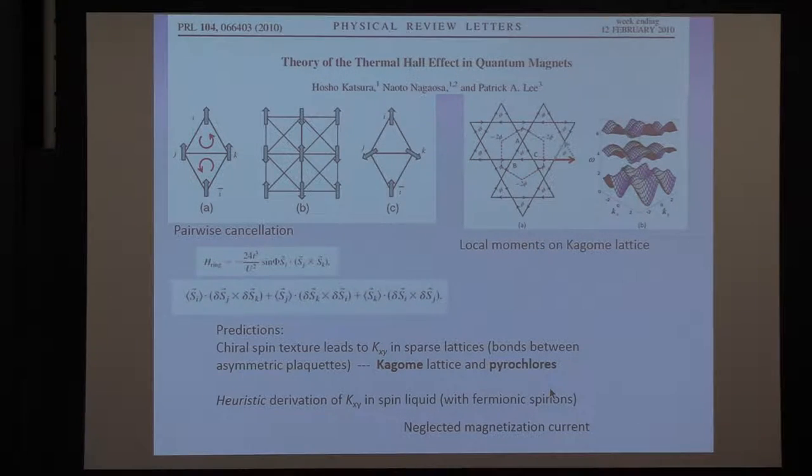So how would you detect it? We measure the thermal Hall effect. We pass a heat current in one direction, let's say along X, magnetic field is along Z, and you could detect a Y component to the heat current. However, they extend this argument to a true spin liquid and couldn't carry out the calculation.